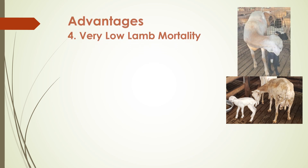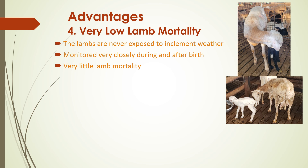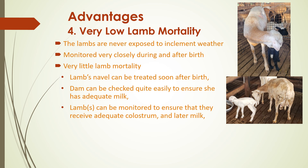The fourth advantage of the DeCampo model is very low lamb mortality. Because the lambs are never exposed to inclement weather and can be monitored very closely during and after birth, the dam can be checked easily to ensure she has adequate milk, while the lambs can be monitored closely to ensure they receive adequate colostrum and later milk, thereby ensuring the lambs receive a good start in life. During our first year of operation, we experienced only 2.3% lamb mortality.